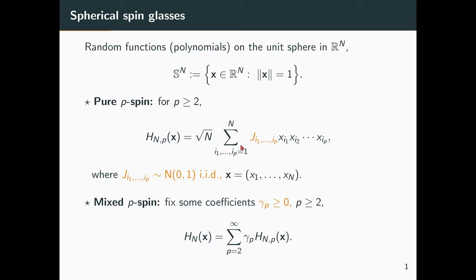And the mixed p-spin models are linear combinations of such models. Here, I'm assuming that the H_p are independent. And to choose a model, you just choose a sequence of parameters, gamma_p. And we are interested in the large N limit to study the function as N goes to infinity and gamma_p are fixed.